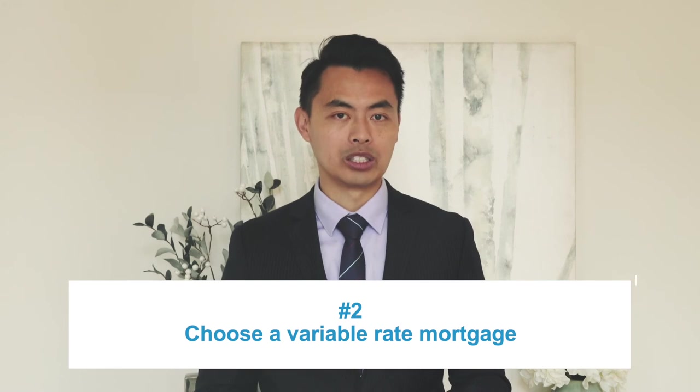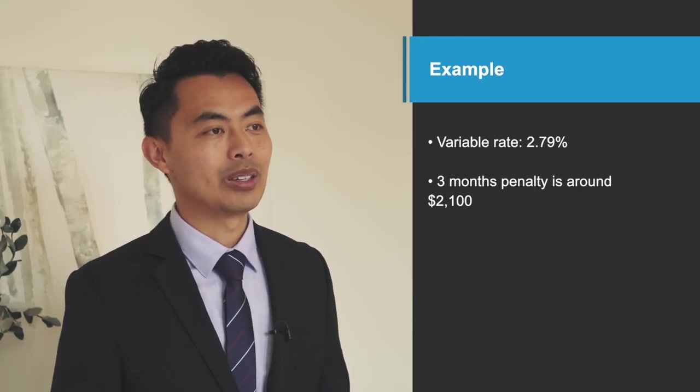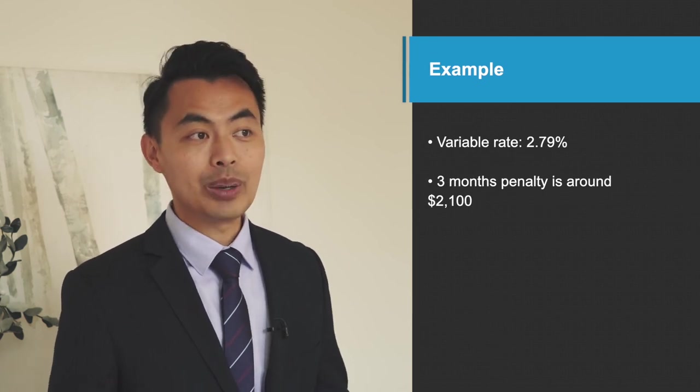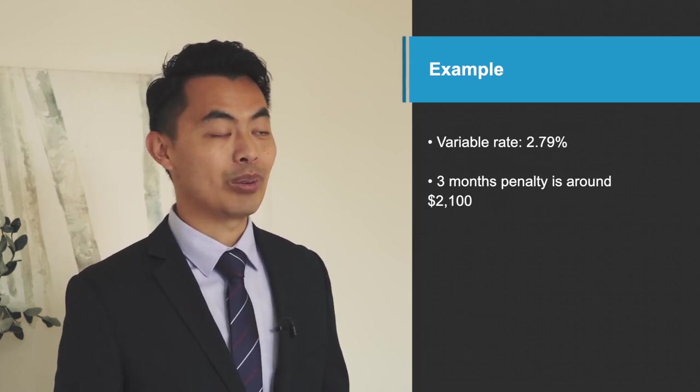Another way to avoid this is to choose a variable rate mortgage. Variable rate mortgages don't use the interest rate differential formula to calculate the penalty. It's simply a three-month interest penalty and works out to be many, many times lower than fixed rate mortgages. For example, say the variable rate you currently have is 2.79%. The three-month penalty will only be around $2,100. That's a lot better than paying $18,000.